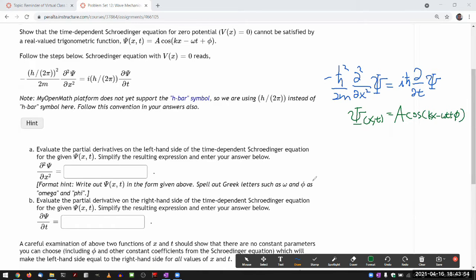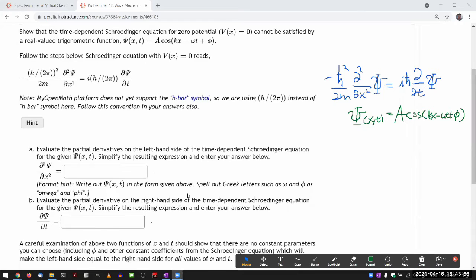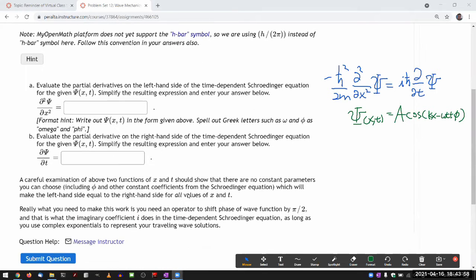So for part a, it says evaluate the partial derivatives on the left-hand side and simplify it. I'm not gonna write down every single step, but point out some of the things that's going to happen. As I apply the first position derivative, I'm going to get, so cosine will become minus a sine, that's the derivative of the outside. And then as I take the derivative of the inside, I'm going to get a factor of k out. That's the first derivative.